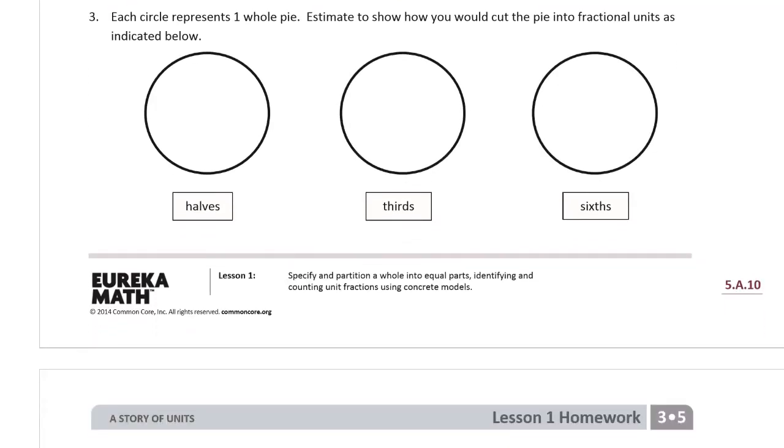Each circle represents one whole pie. Estimate to show how you would cut the pie into fractional units shown below, so halves. Okay, I'm just going to try and go. The thing about circles is that all fractions really have to go right through the middle, the center of the fraction. So my trick for circle fractions is figure out where the center is as close as you can to it, and then just all lines have to go through it. There's the center. Thirds is going to look like a pie. Thirds are hard to do with circles. That's about as good as it's going to get. Looks like a big Y.